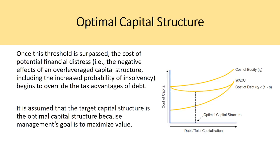The target capital structure is the optimal capital structure because management's goal is to maximize value. The business has its lowest WACC possible at the optimal capital structure, and therefore its highest projected value. If a business has no debt, its value will be significantly lower than in a scenario where it is at target capital structure with a little debt and some equity. That's why you aim for the target capital structure when building the WACC, and why you need to input that target capital structure in your discount formula.